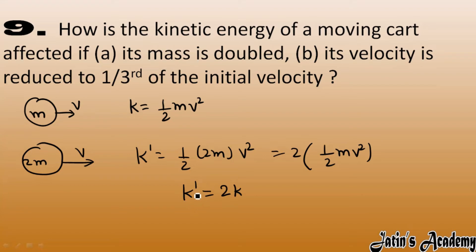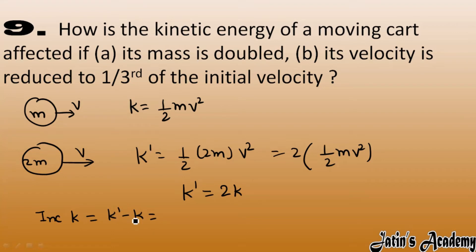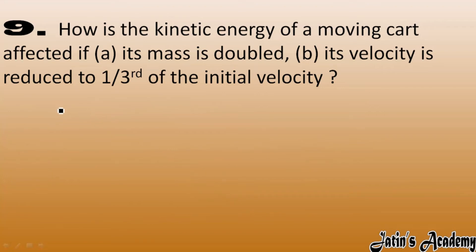The final kinetic energy gets doubled. The increase in kinetic energy is final KE minus initial KE, which is 2K minus K, giving an increase of K — equal to the initial kinetic energy.